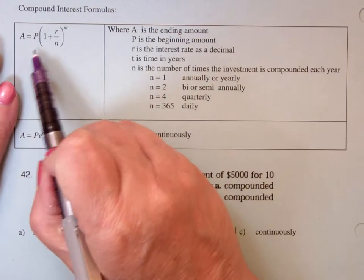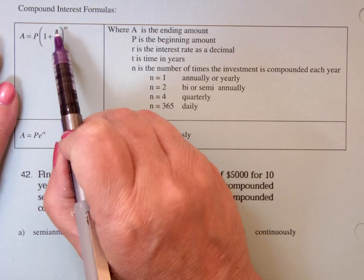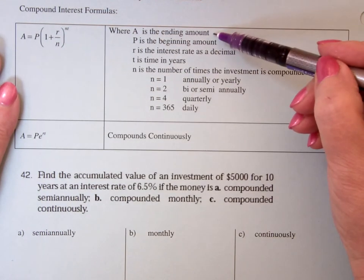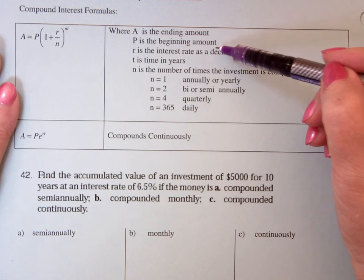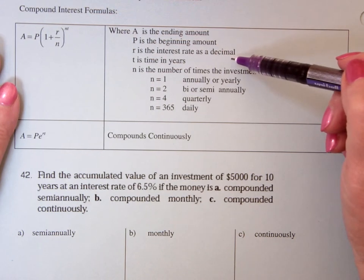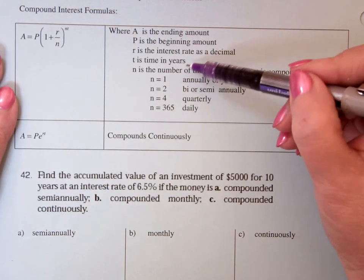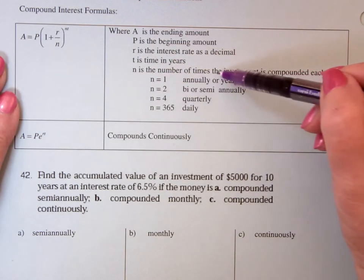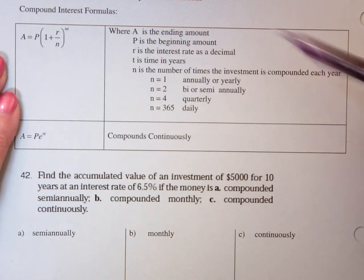Which says that A equals P times 1 plus R over N to the N times T, where A is the ending amount, P is the beginning amount, R is the interest rate as a decimal, T is time in years, N is the number of times the investment is compounded each year.